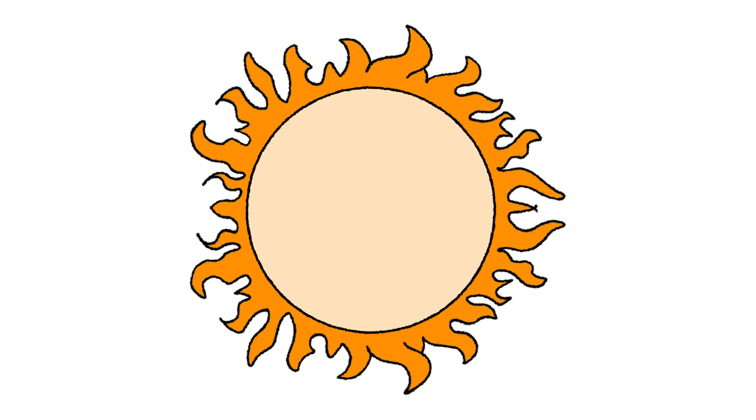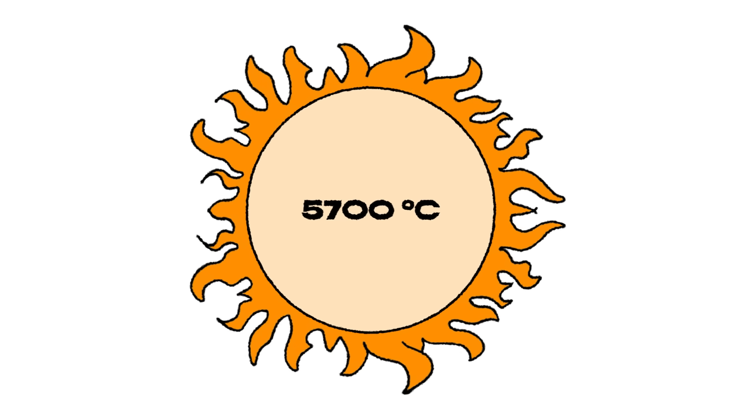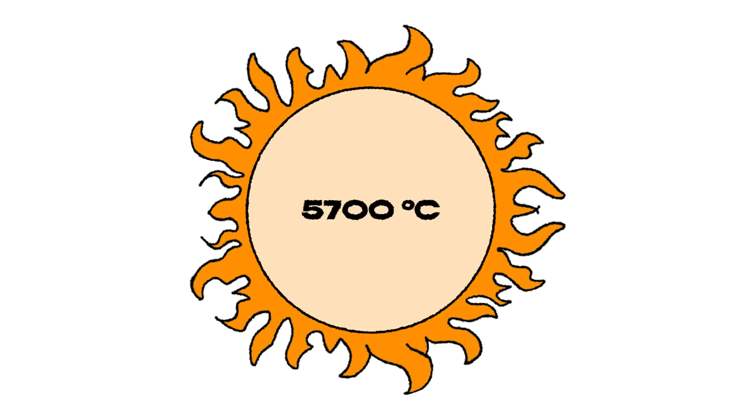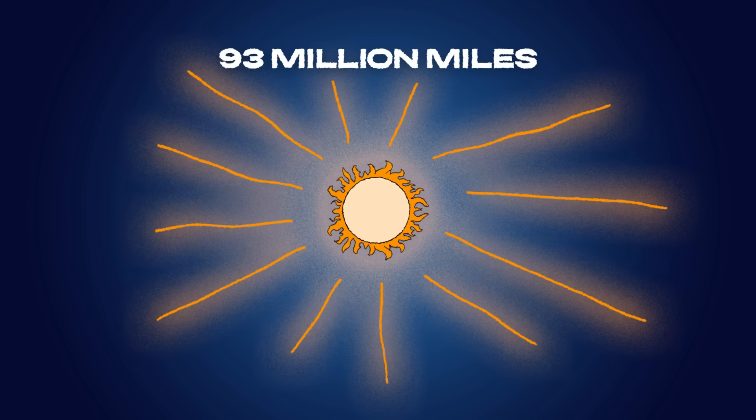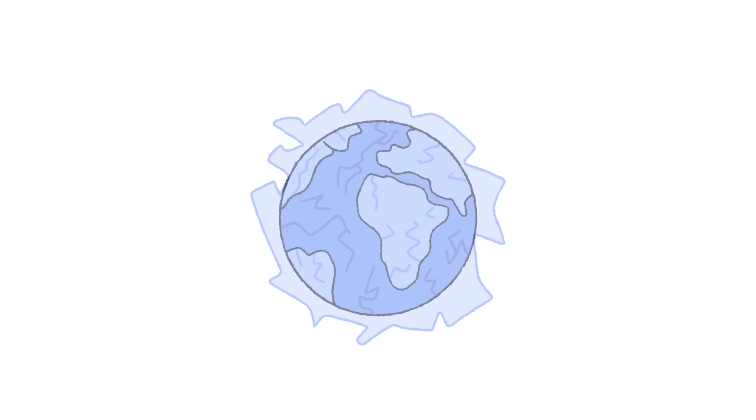Our sun burns at a scorching 5,700 degrees Celsius, blasting energy across 93 million miles of space. Without it, Earth would be a frozen wasteland within days. Pretty powerful, right?